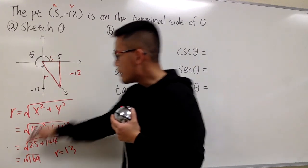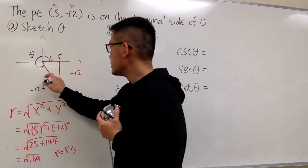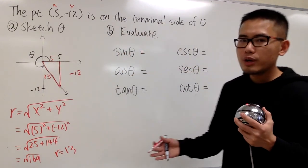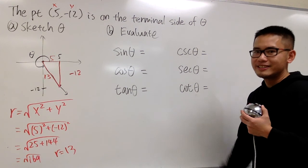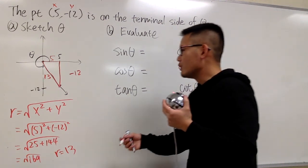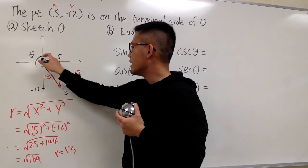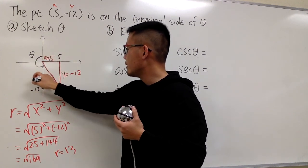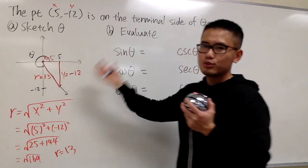That means I can come here, and I will label this as 13 for the hypotenuse. And now we are ready to fill this out. And before that, if you would like, you can indicate this much better. You can say the x is 5, the y is negative 12, and the r is 13, just to make this super clear.